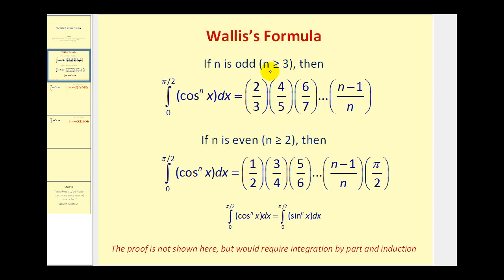It states that if n is greater than or equal to three and odd, then this definite integral is equal to two-thirds times four-fifths, and so on, all the way out to n minus one over n. The product of these fractions gives us the value of this definite integral. Notice the numerator is a sequence of even whole numbers all the way out to n minus one, and the denominator is the sequence of odd whole numbers all the way out to n.